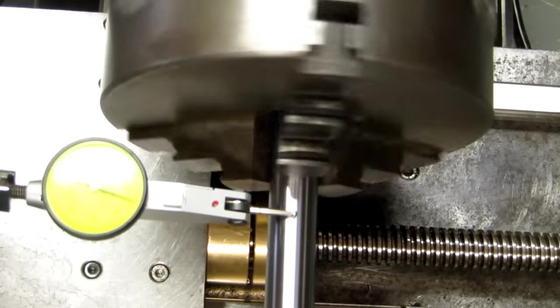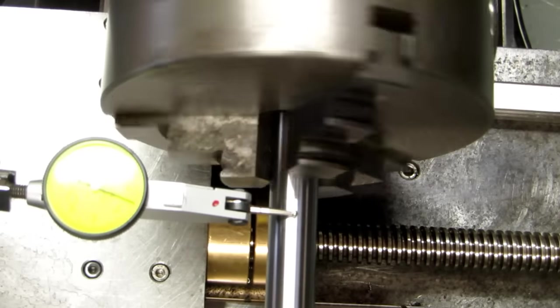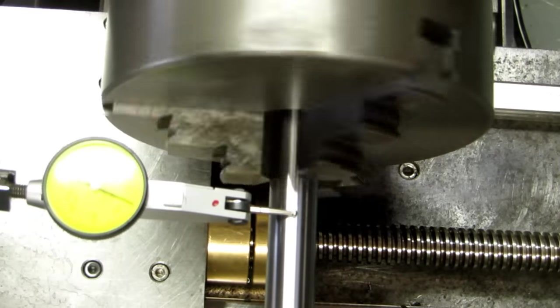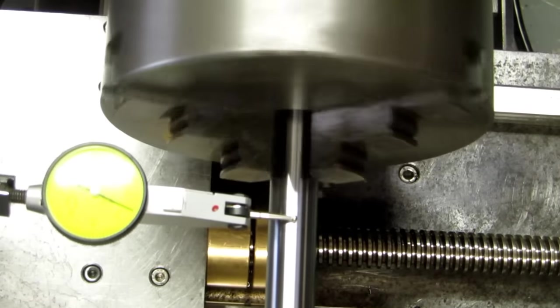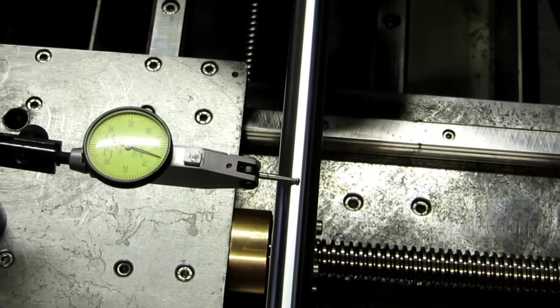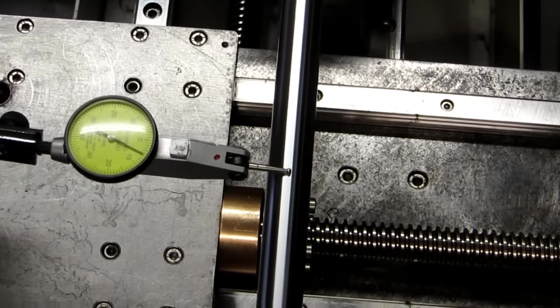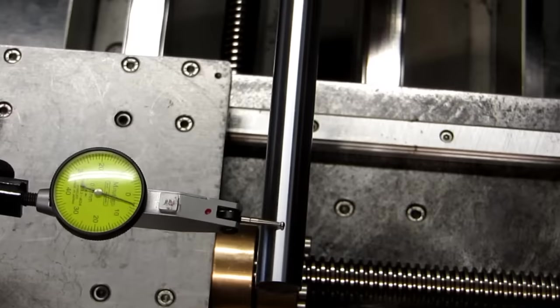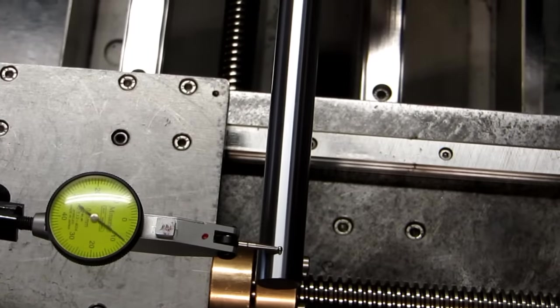Now we can check the runout of the system. After some adjusting of the chuck, I get around 0.05mm of runout near the chuck, which I think is okay. When moving the dial indicator across the length of the steel rod, we get about the same runout, which is good.